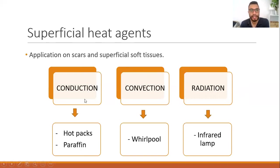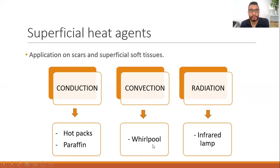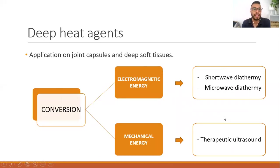For superficial heat agents, we mainly use three methods of heat transfer: conduction, convection, and radiation. Examples include hot packs and paraffin for conduction, a whirlpool or hot tub for convection, and infrared lamps for radiation.